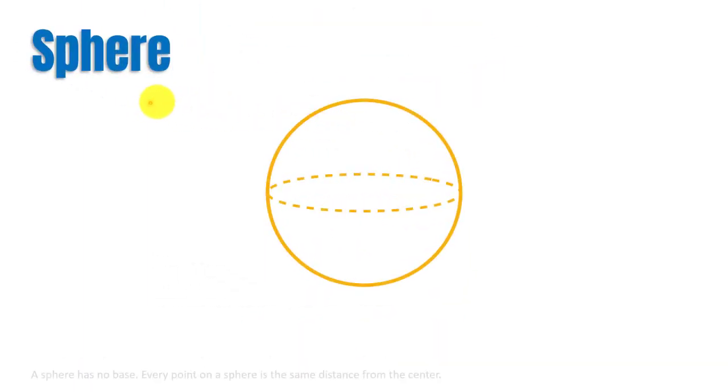A sphere has no base. Every point on a sphere is the same distance from the center. Hence, it is also not a polyhedron.